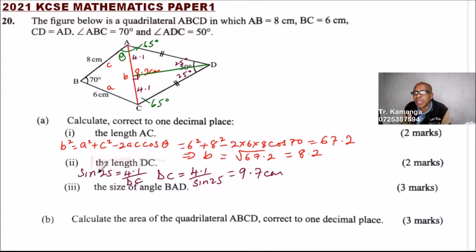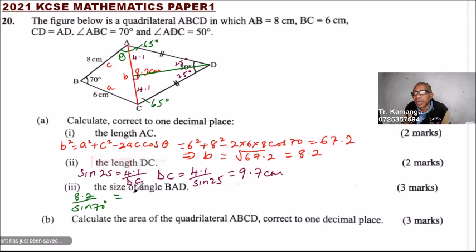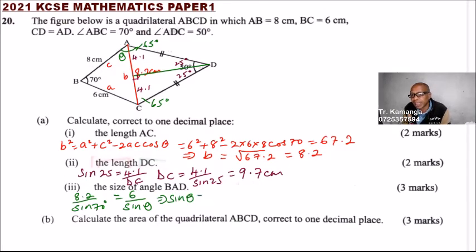We say 8.2 divided by the sine of 70 degrees equals 6 divided by the sine of theta. Cross-multiplying, this implies sine theta equals 6 times the sine of 70, divided by 8.2.